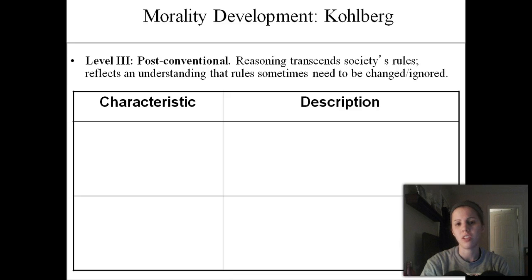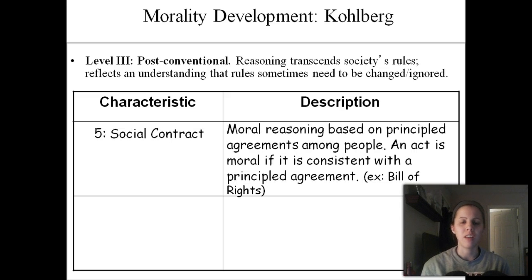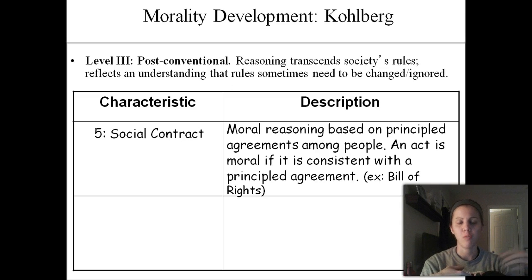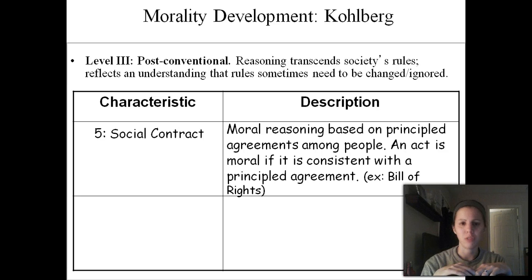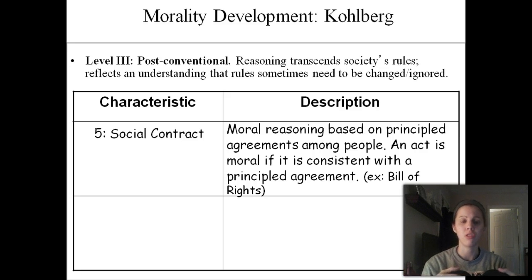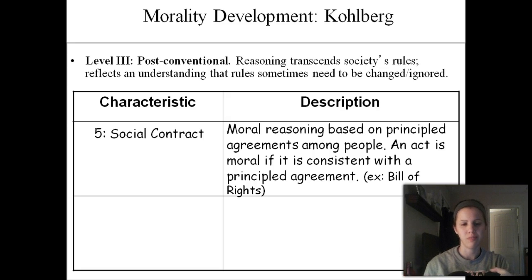The third stage is called the post-conventional stage — the final stage of development. Kohlberg said not everybody reaches this stage because it requires a lot of transcendent, abstract thinking. The first characteristic is called the social contract, meaning you develop morality based on an agreed-upon set of rights between people — the greatest good for the greatest number. Sometimes individuals can be hurt if more people benefit. For example, if you feel the teacher did a terrible job and a socially agreed-upon standard says all students deserve quality teaching, you might justify cheating because that standard wasn't met.